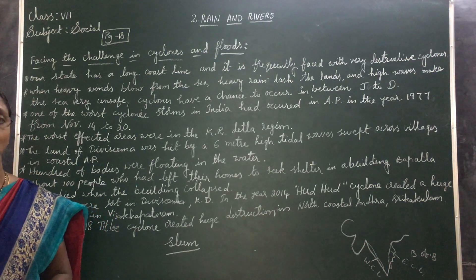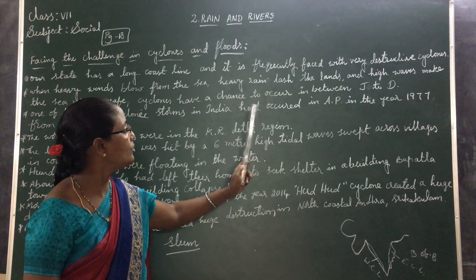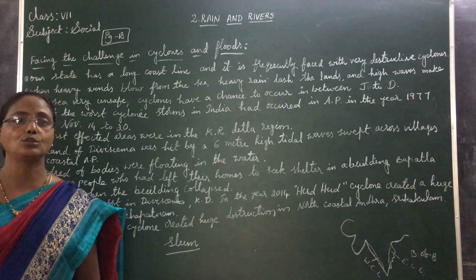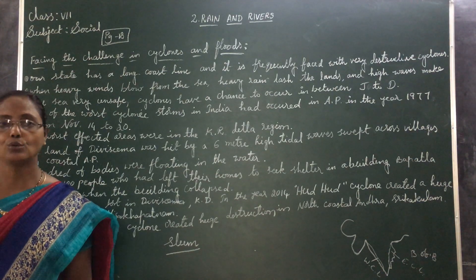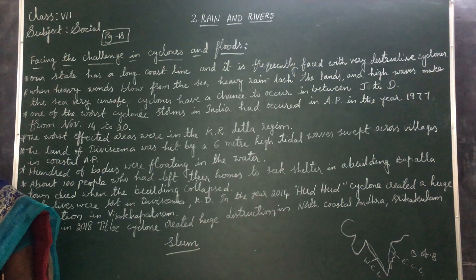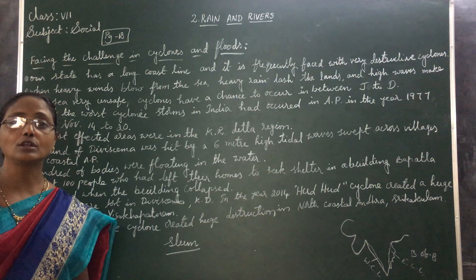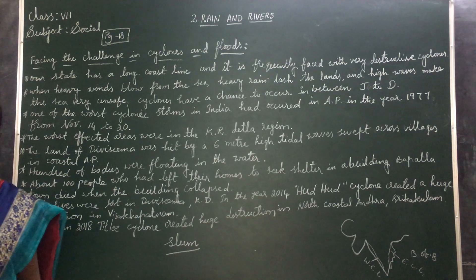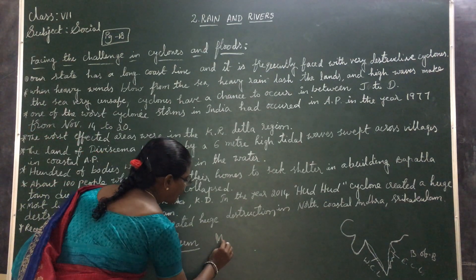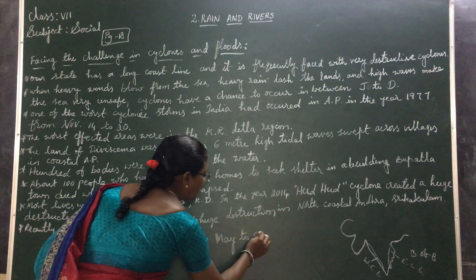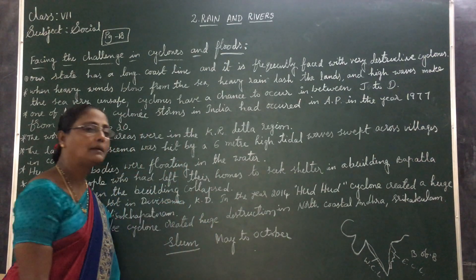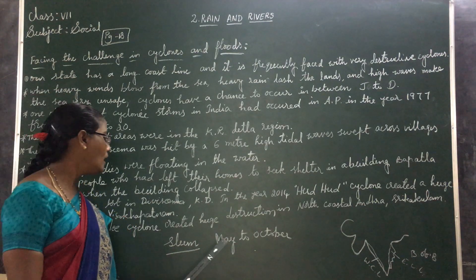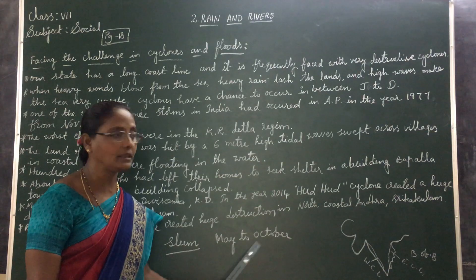Normally, when do cyclones and floods occur? Cyclones and floods occur in the months of June and December. When do cyclones form in the Bay of Bengal? Cyclones form in the Bay of Bengal in the months of May to October.